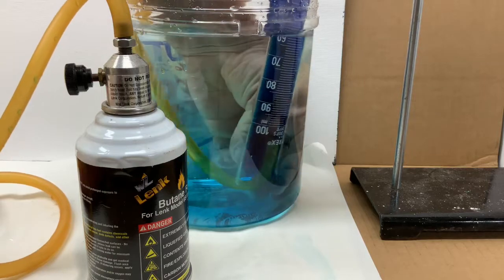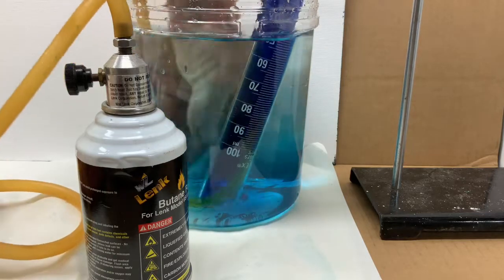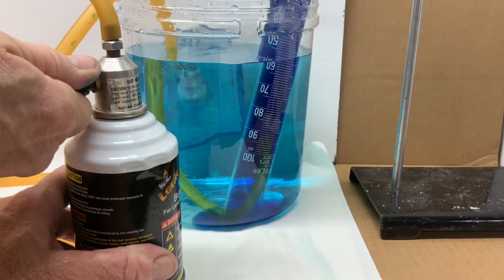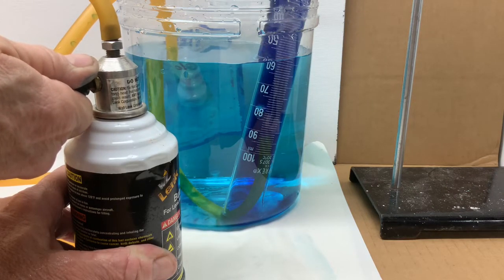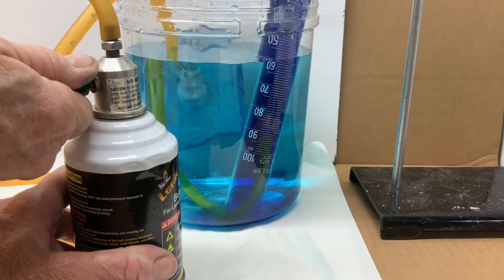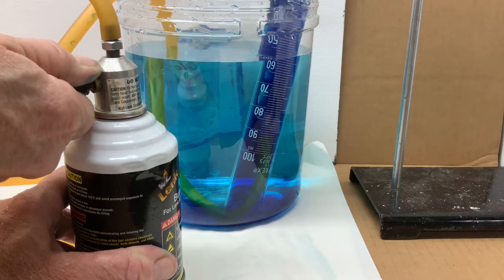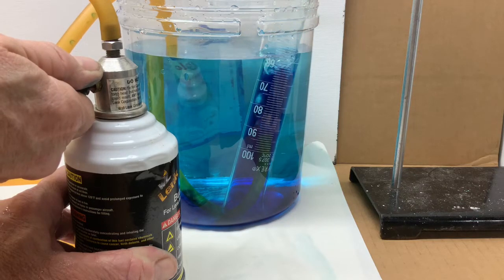I'll put the hose up underneath the bottom of the grad cylinder, the inverted grad cylinder, and start adding the butane gas. The water is pushed out the bottom of the cylinder as the gas displaces the water in the cylinder.